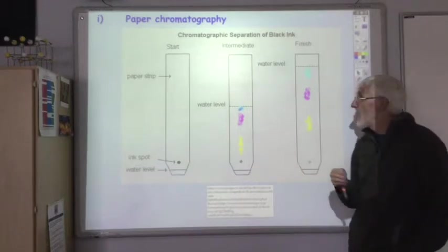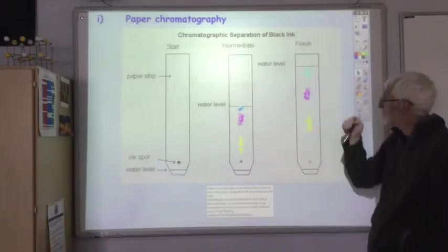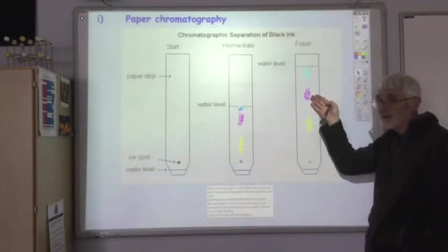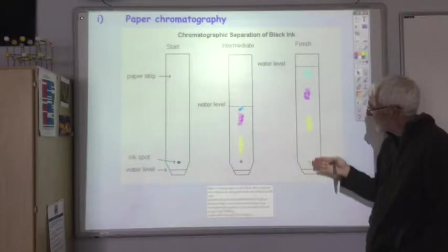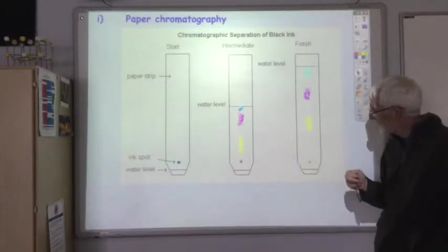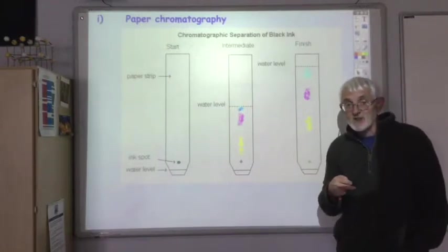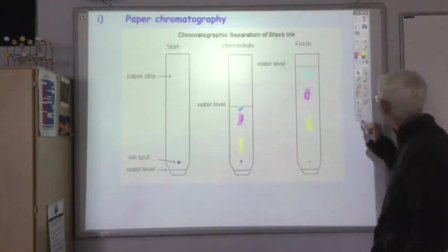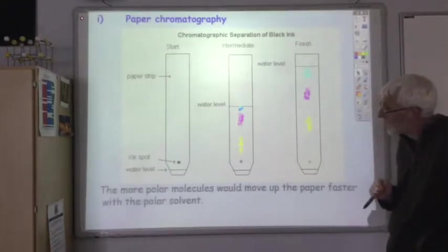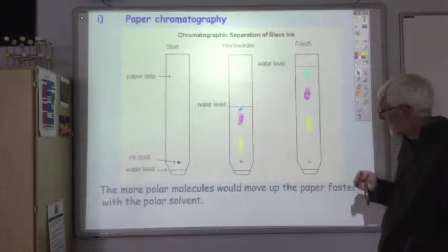So very polar dyes will dissolve in the water and move with the water. The blue here would be a very polar dye—it's moved up very quickly with the water. The purple, polar but not quite as polar as the blue dye. Yellow, slightly less polar still. And then what's left on the dot down here is actually non-polar—it wasn't soluble in the water at all. So the more polar molecules move up the paper faster with the polar solvent.